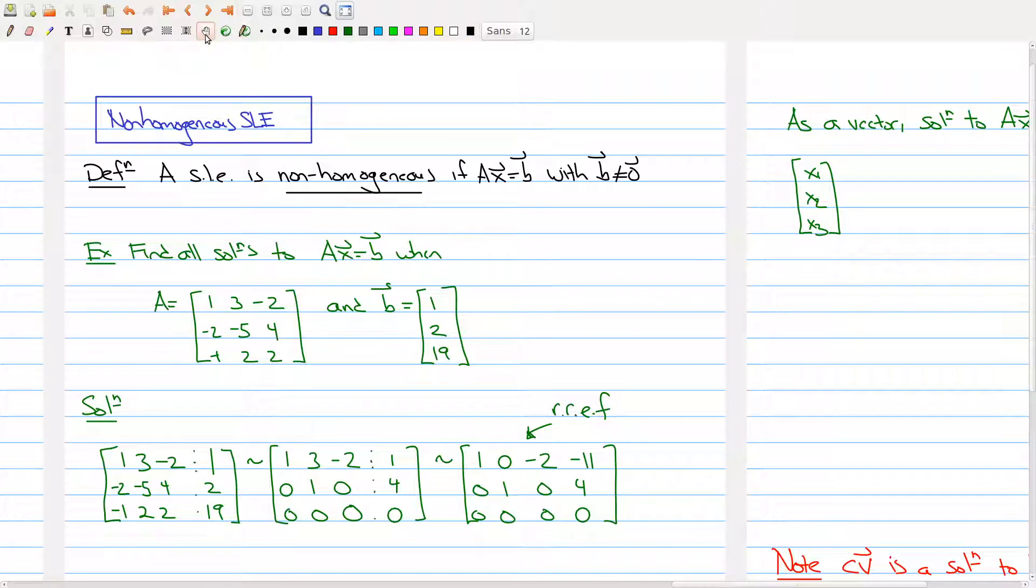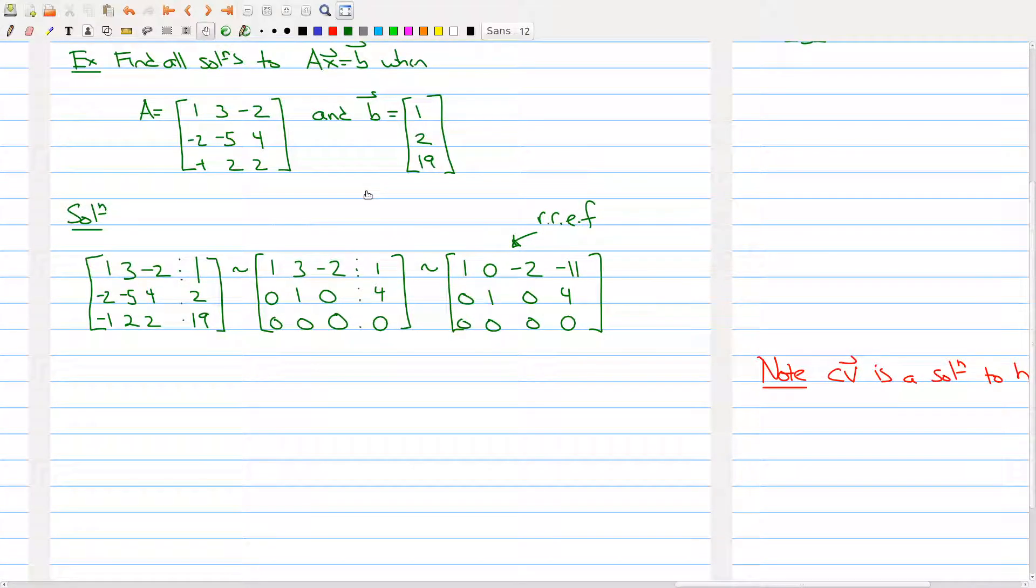Now, this matrix in this particular form tells me some very useful information. It tells me that x1 and x2 are basic variables, and x3 is a free variable.